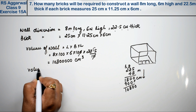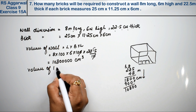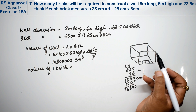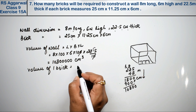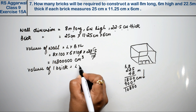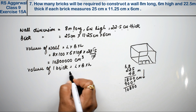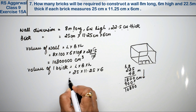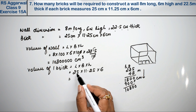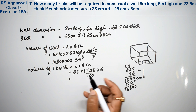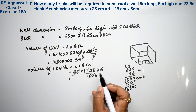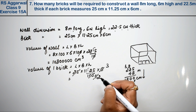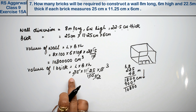Now we will calculate the volume of one brick. The brick dimensions are 25 cm into 11.25 cm into 6 cm. We can write 11.25 as 1125 upon 100, and then simplify: 25 into 4 is 100, and 2 into 2 is 4, 2 into 3 is 6.